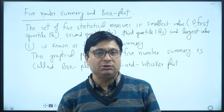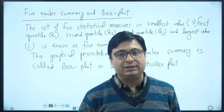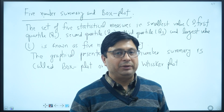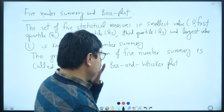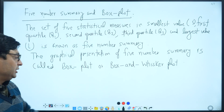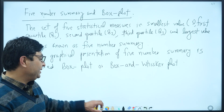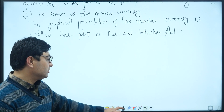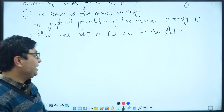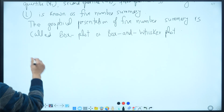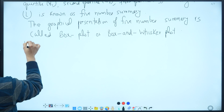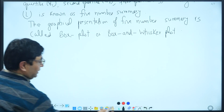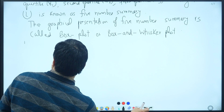The box plot can be drawn horizontally or vertically. The horizontal box plot is independent of the y-axis, and the vertical box plot is independent of the x-axis. This means it is one-dimensional, and we can consider either a row or column. Now, how do we construct it? We plot it and define it.